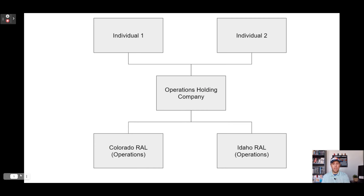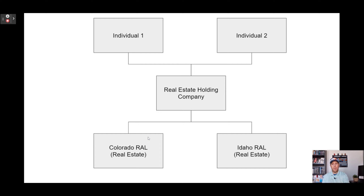Now I'm going to jump over to the real estate side, and it's going to look extremely similar — this is just the real estate companies. We determined through our conversations that the real estate we own is worth enough money that it's beneficial to have it separated out and held in its own separate entity. So we have a holding real estate company that is owned 50% by my father and I, and then we have an entity in Colorado that owns that real estate and an entity in Idaho. Each of these are just registered and operate in their respective states, and then there's a holding company in a separate state.